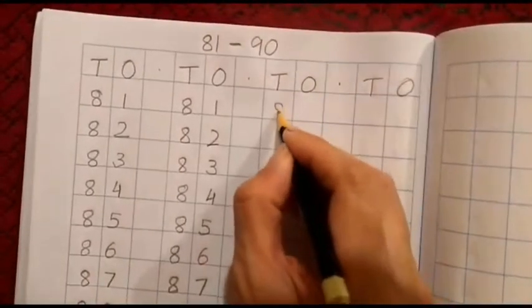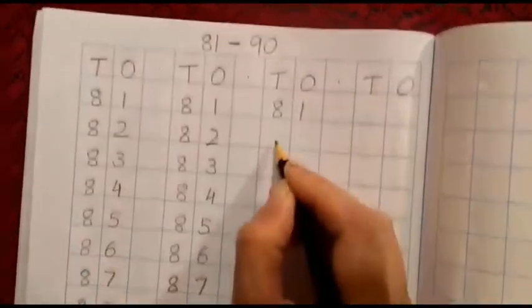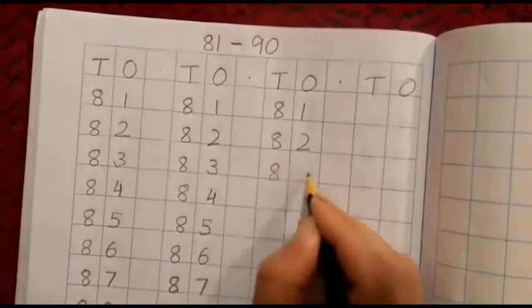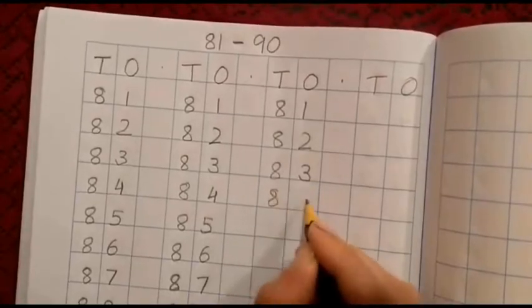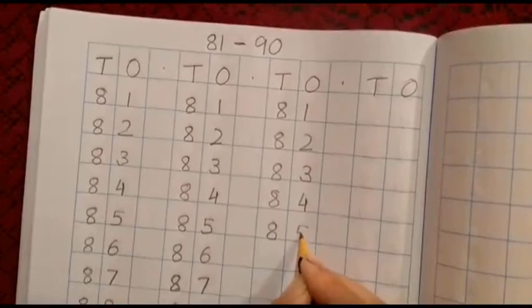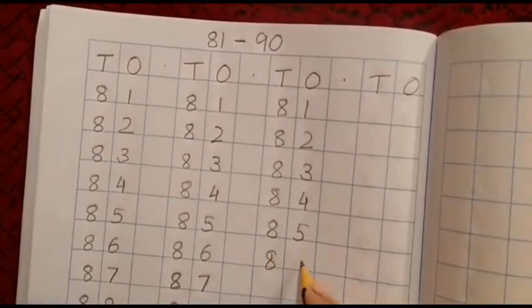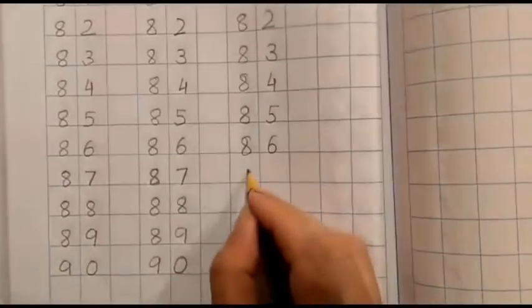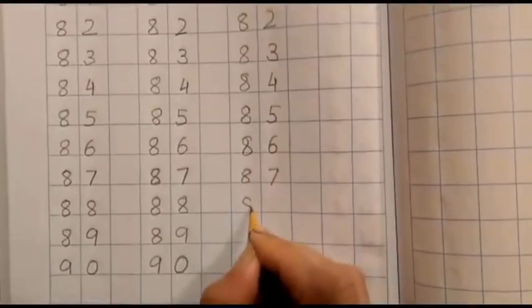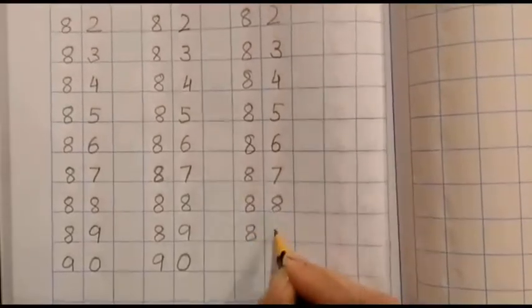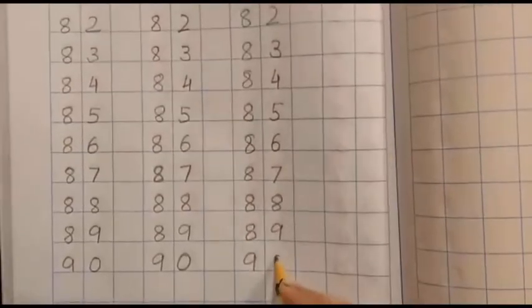Again, in next T and O. 8, 1, 81, 8, 2, 82, 8, 3, 83, 8, 4, 84, 8, 5, 85, 8, 6, 86, 8, 7, 87, 8, 8, 88, 8, 9, 89, 9, 0, 90.